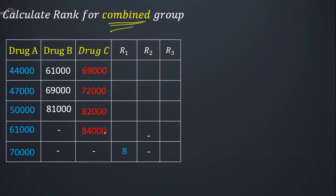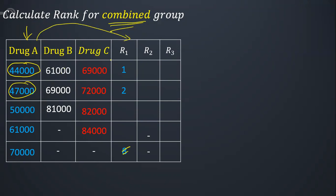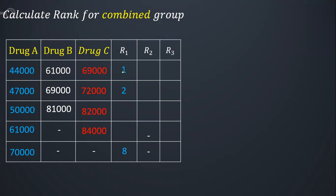We take all values into a combined group. The smallest value gets rank 1, the next smallest gets rank 2, and so on. If a value belongs to group A, I put the rank in R1; if it belongs to another group, I place it in the corresponding group column. Ranks 1, 2, and 3 are assigned to the three smallest distinct values, giving 12 total ranks across all 12 observations.